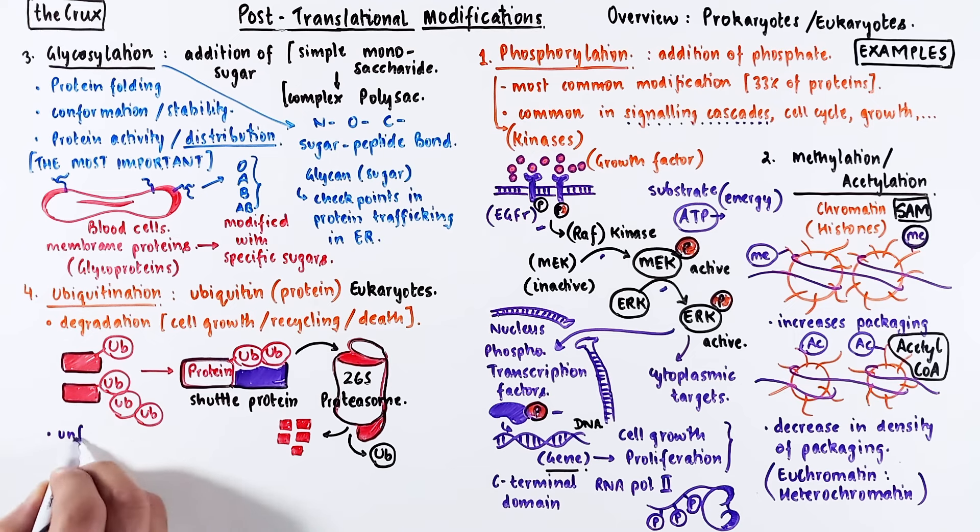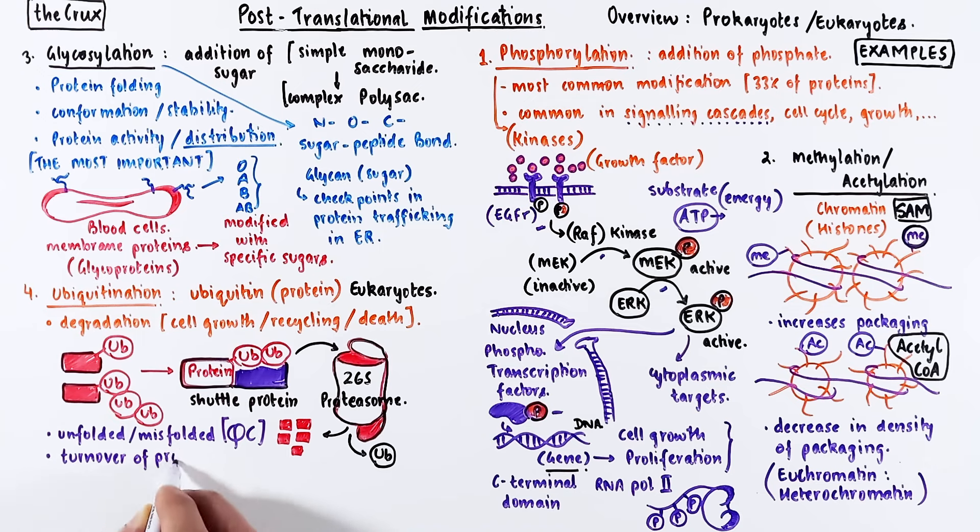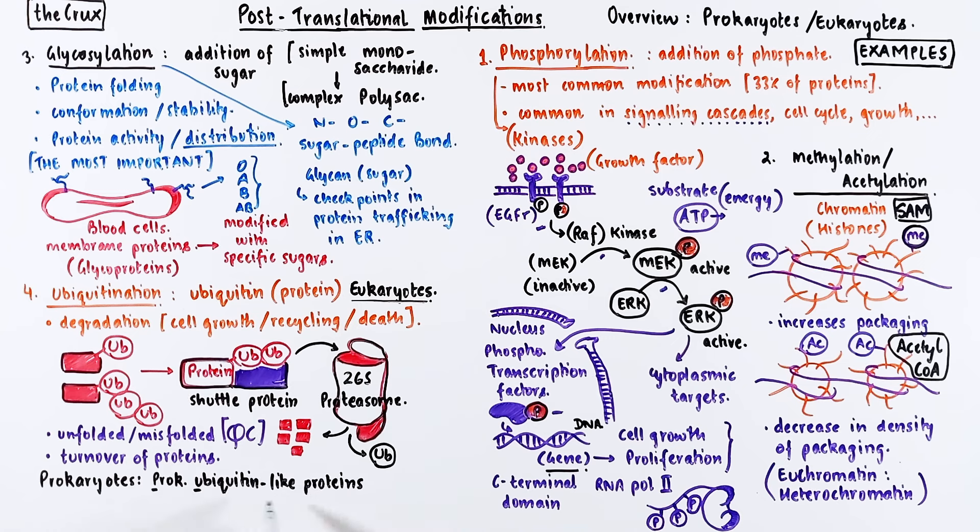Ubiquitination is commonly used when proteins are misfolded or left unfolded and need to be degraded. Proteins that have to be maintained in steady state levels also undergo turnover through ubiquitination. Since ubiquitination only occurs in eukaryotes, the prokaryotic analog is called prokaryotic ubiquitin-like proteins—in short, pup proteins. The modification is referred to as pupylation. Essentially, small puppies get added to proteins and those proteins get degraded.